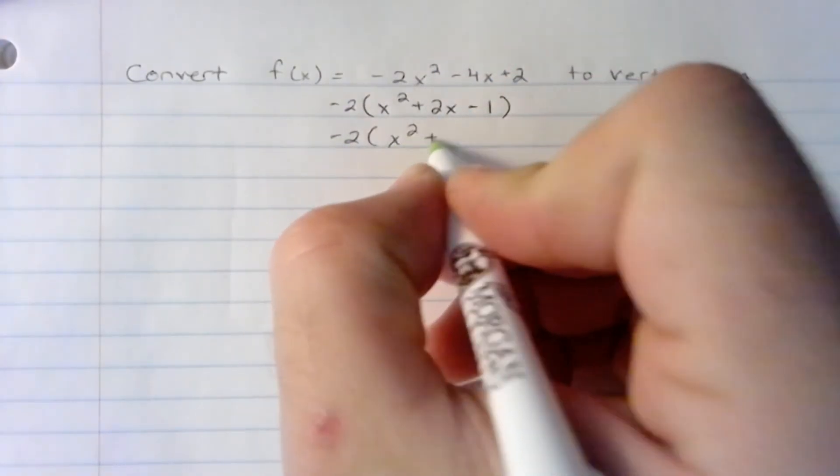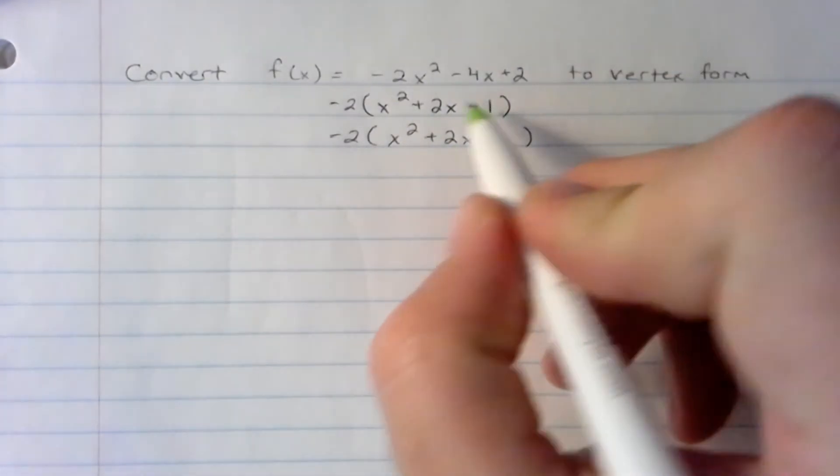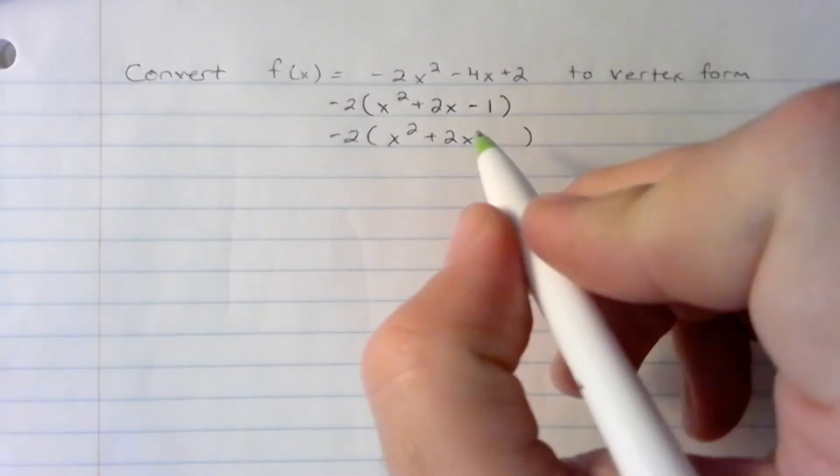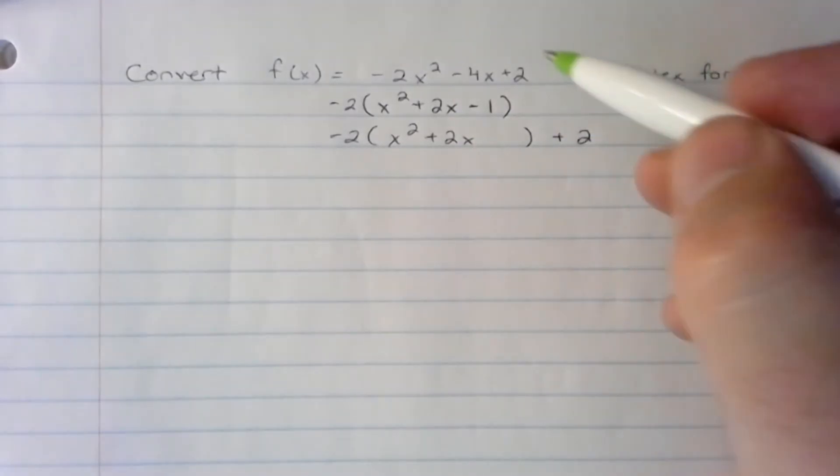But then to keep everything balanced, I have to, you would think, add 1 or subtract 1 to the outside, which I'm going to do. But remember I still have this negative 2. Anything that's working inside the parentheses is getting multiplied by that negative 2.